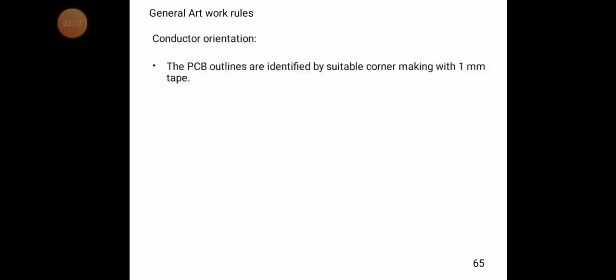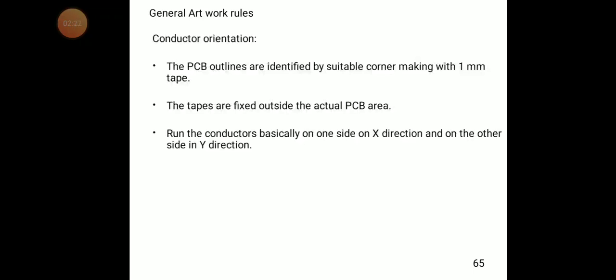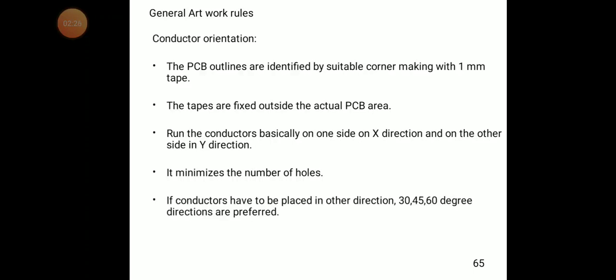General artwork rules — conductor orientation refers to how the conductors are placed. The PCB outlines are identified by suitable corner markings with 1 millimeter tape, fixed outside the actual PCB area. Run the conductors on one side in the X direction and on the other side in the Y direction; this minimizes the number of holes. If conductors must be placed in other directions, 30, 45, or 60 degree directions are preferred.